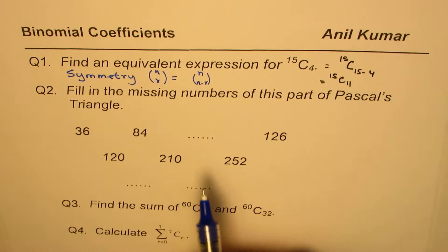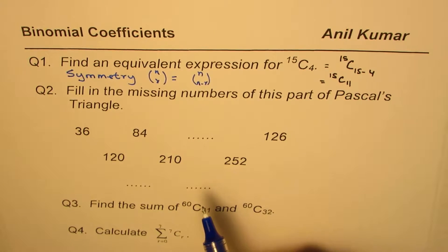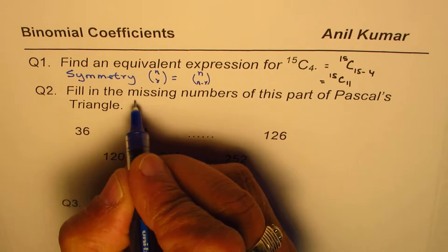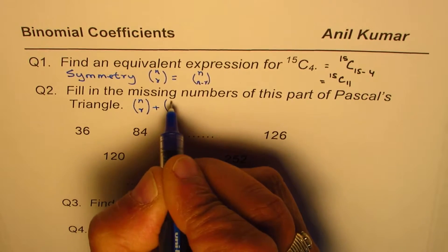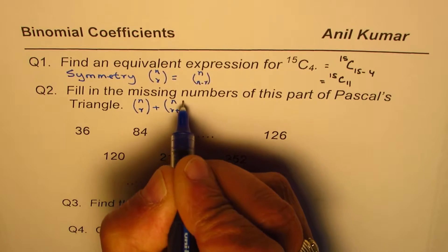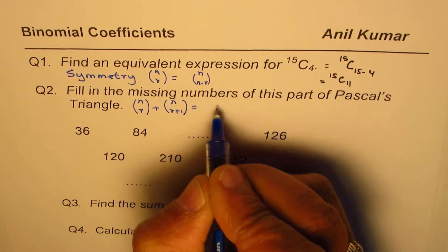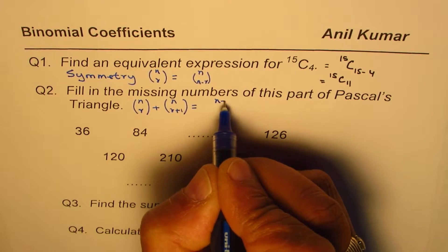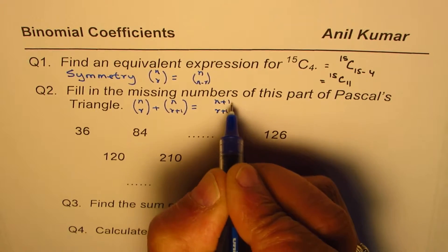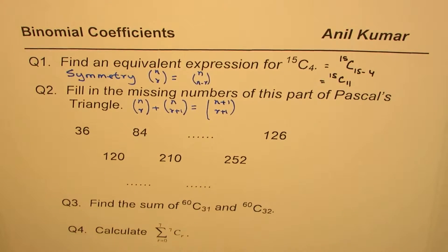The property is sum of two consecutive entries in Pascal's triangle, which is written as nCr plus nC(r plus 1) equals the next row's element on the right side, which is (n plus 1)C(r plus 1). So that is the property which we are going to use. Use this property to fill them up.